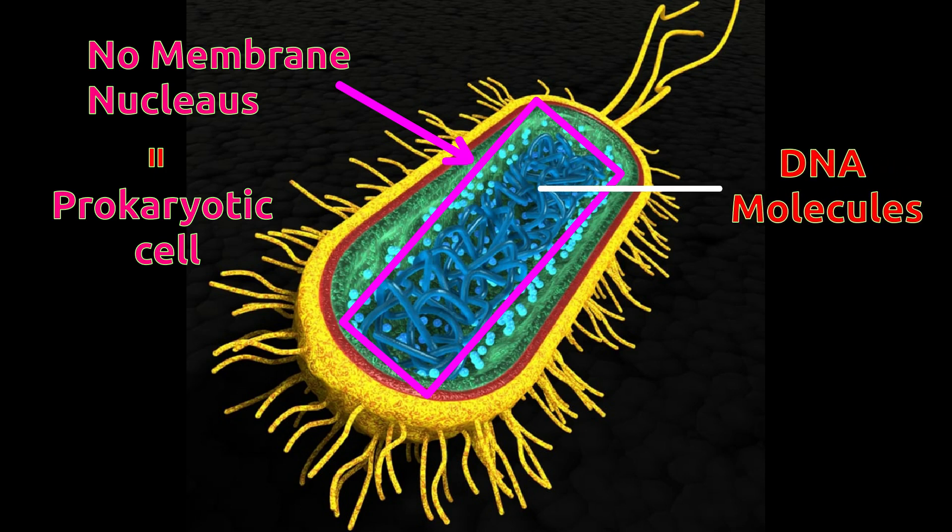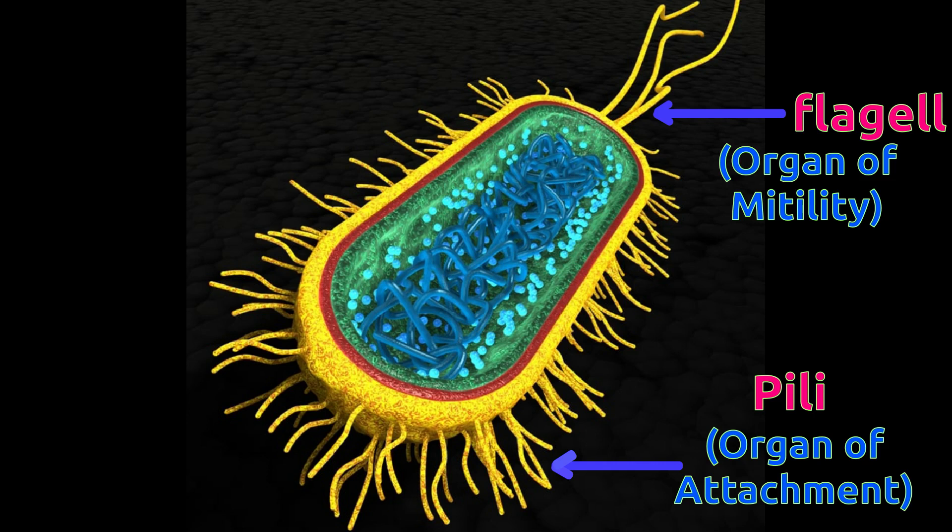On the outer part of the cell, there are long thread-like structures called flagella. These structures help bacteria move around and are thus called the organ of motility. There are also some small threads on the outer surface. These small threads or appendages are called pili. Pili help in attaching bacteria to the surface of their food and are thus called the organ of attachment.